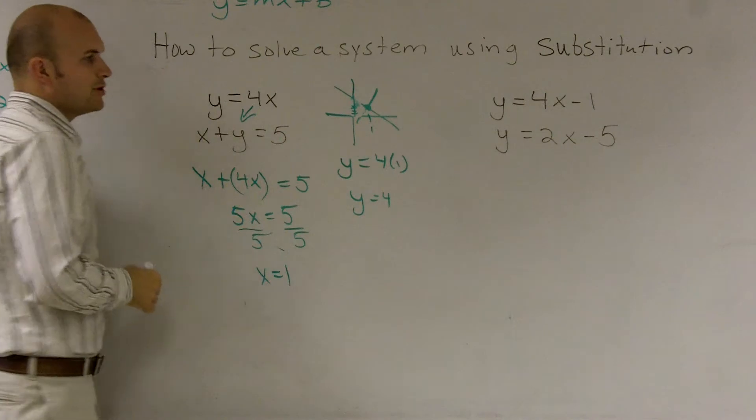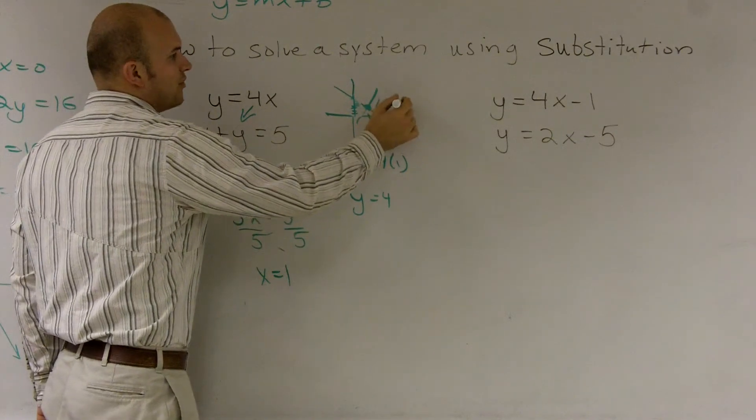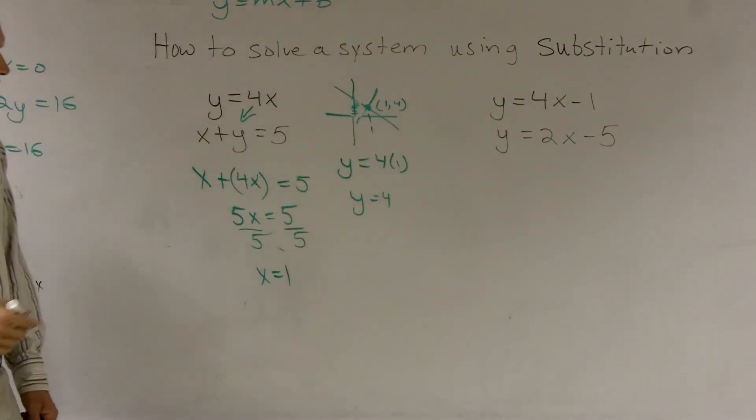We can say that that would be your point one, four. So you know that the intersection of these two lines is at one, four.